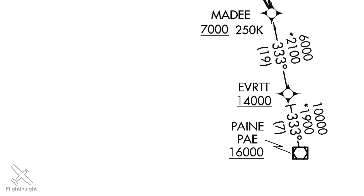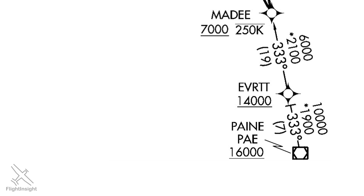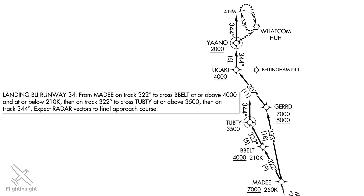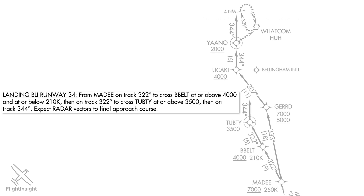This is important on arrivals. We need to lose a fair amount of altitude here, and descending quickly while maintaining a minimum airspeed can be tricky, so canceling speed restrictions can help aircraft descend more quickly. So at MADI, the route splits off into two branches.